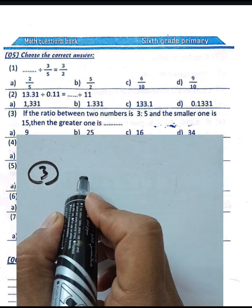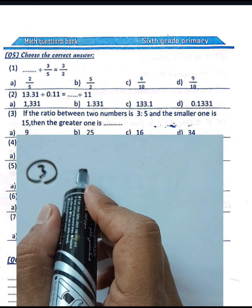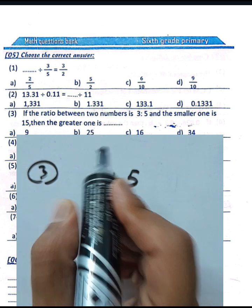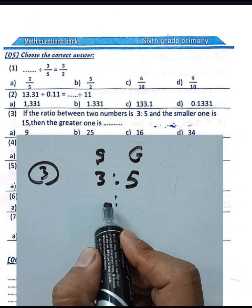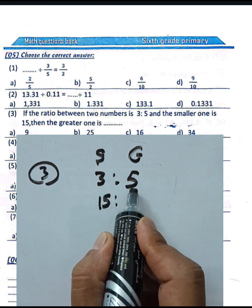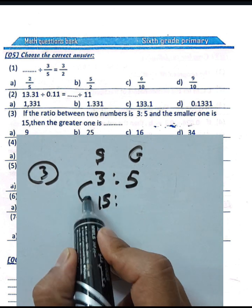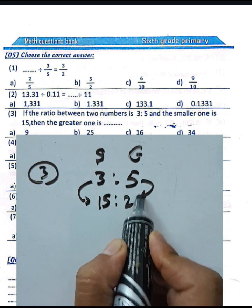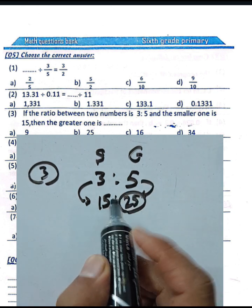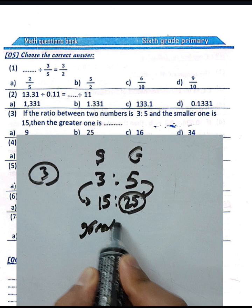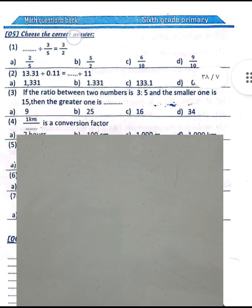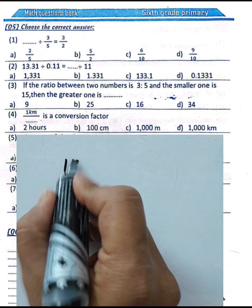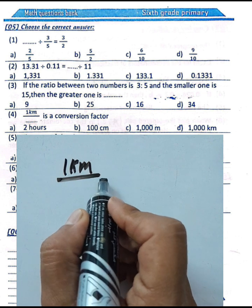Question number three: the ratio between two numbers is 3 to 5, where three is the smaller and five is the greater. If the smaller number is 15, then: 3 times 5 equals 15, so 5 times 5 equals 25. The greater number is 25.